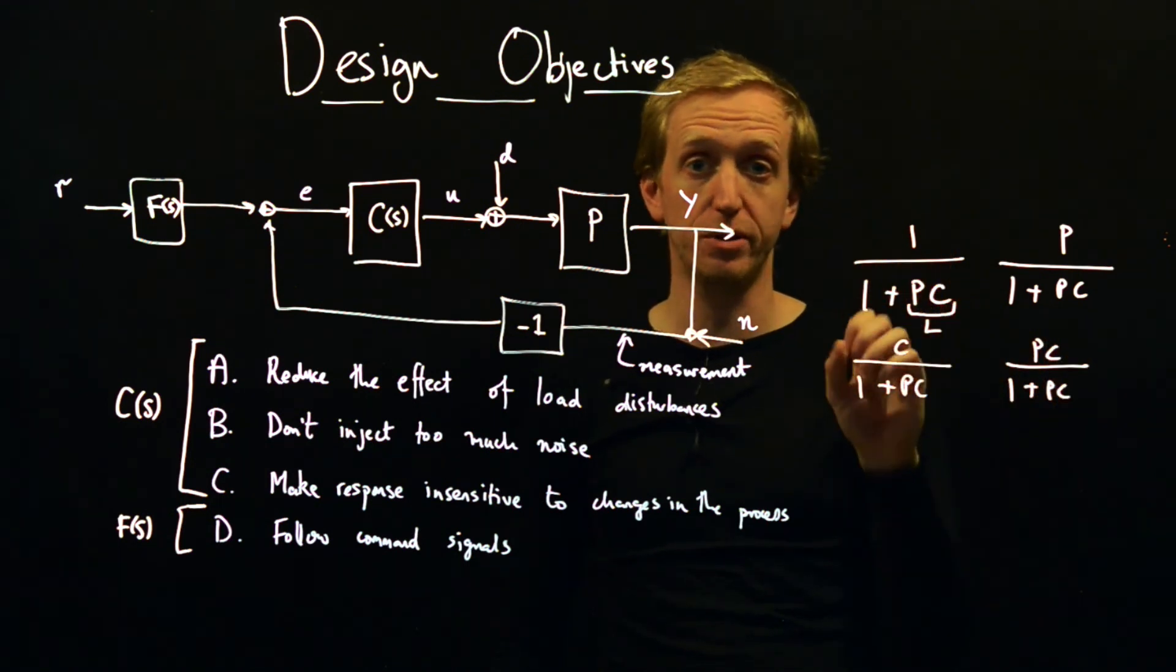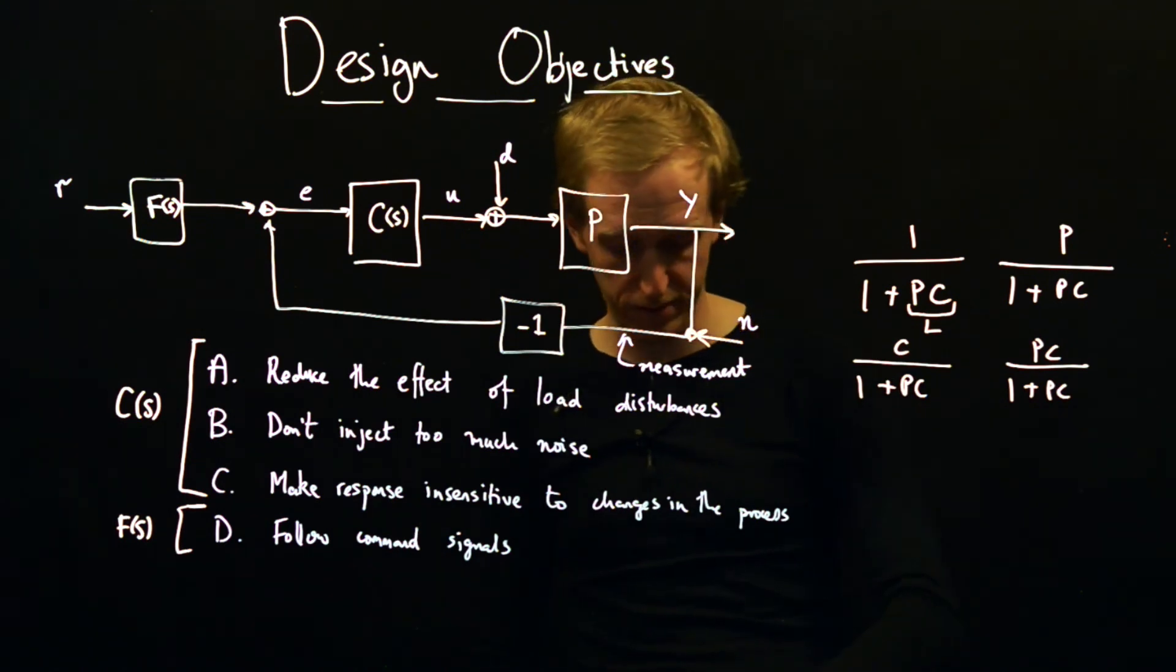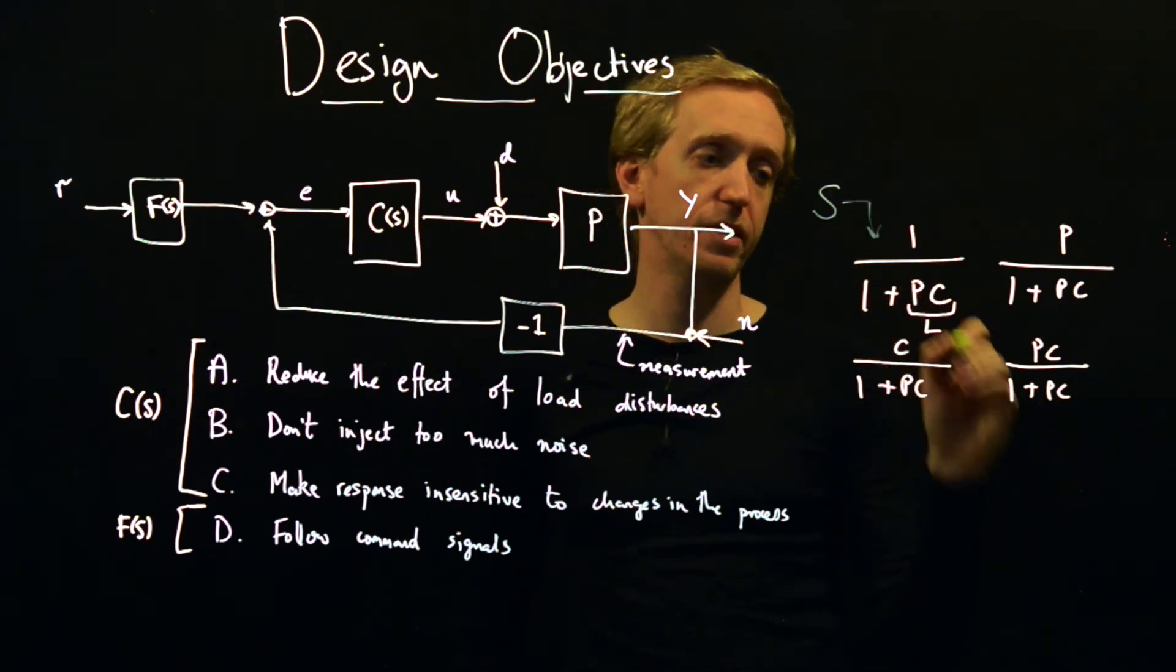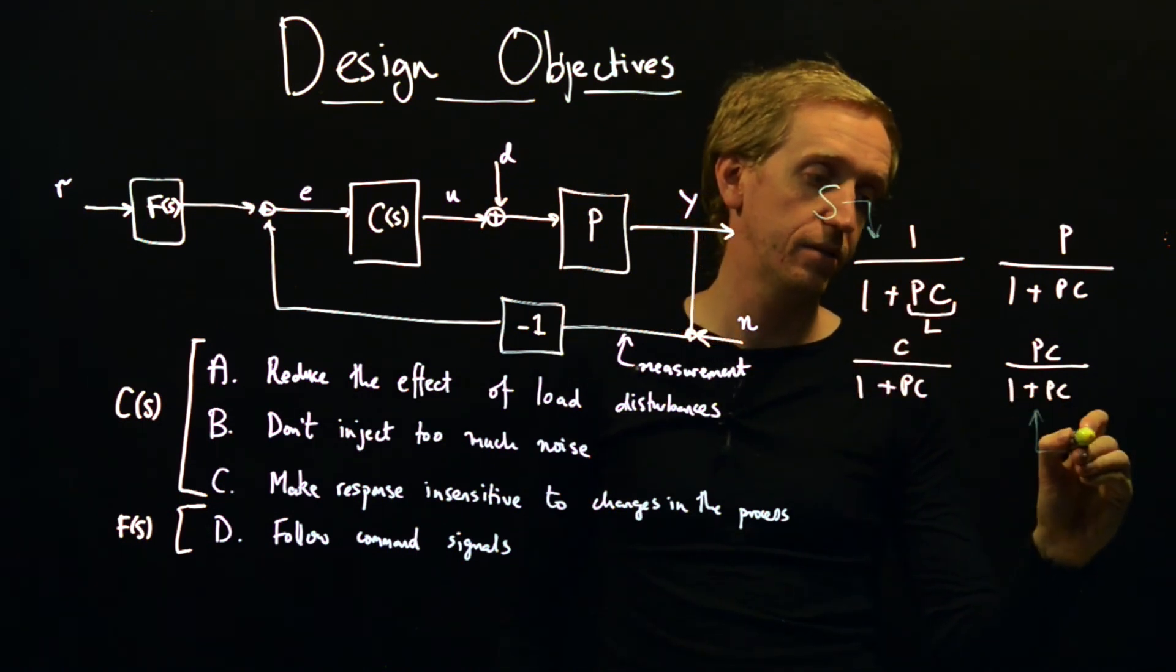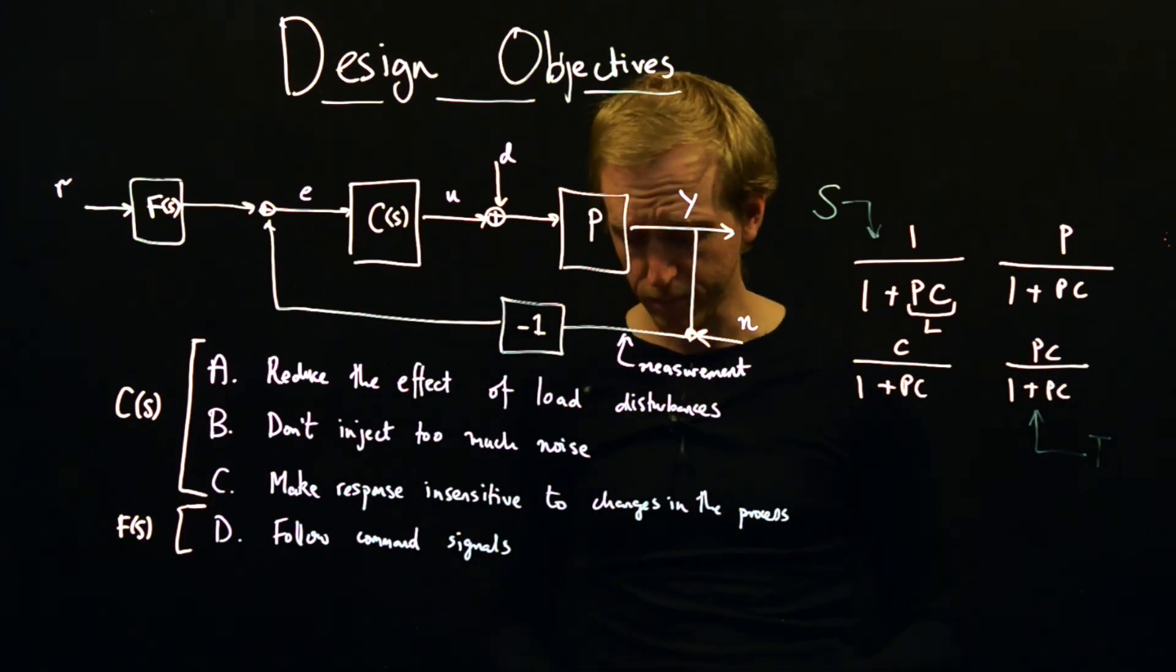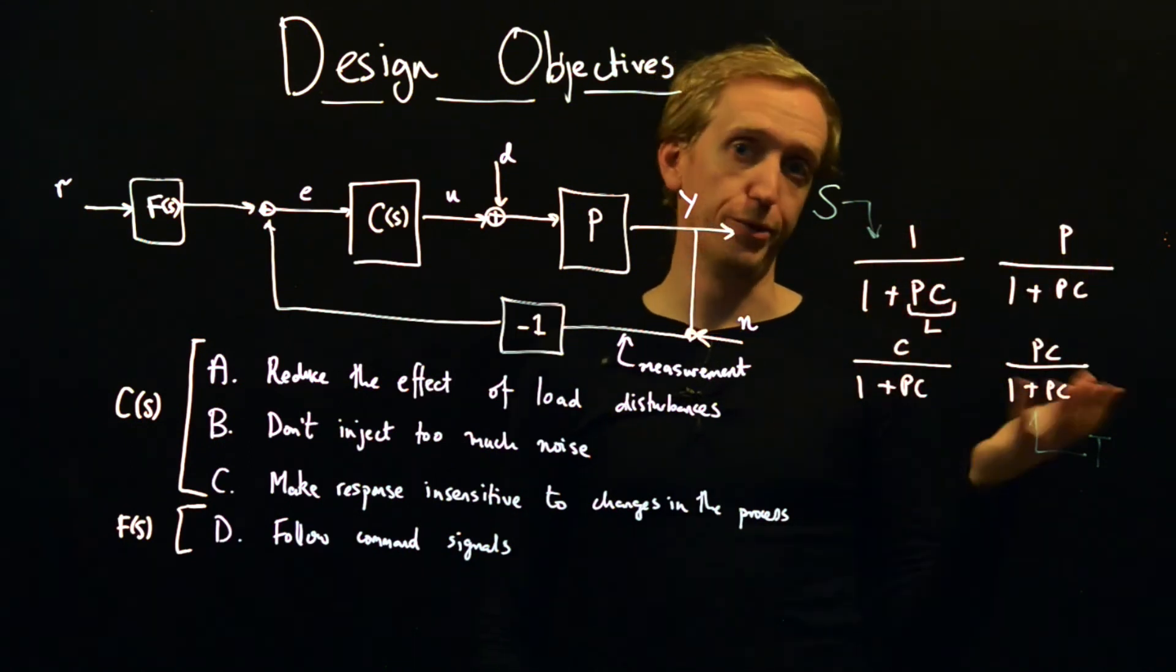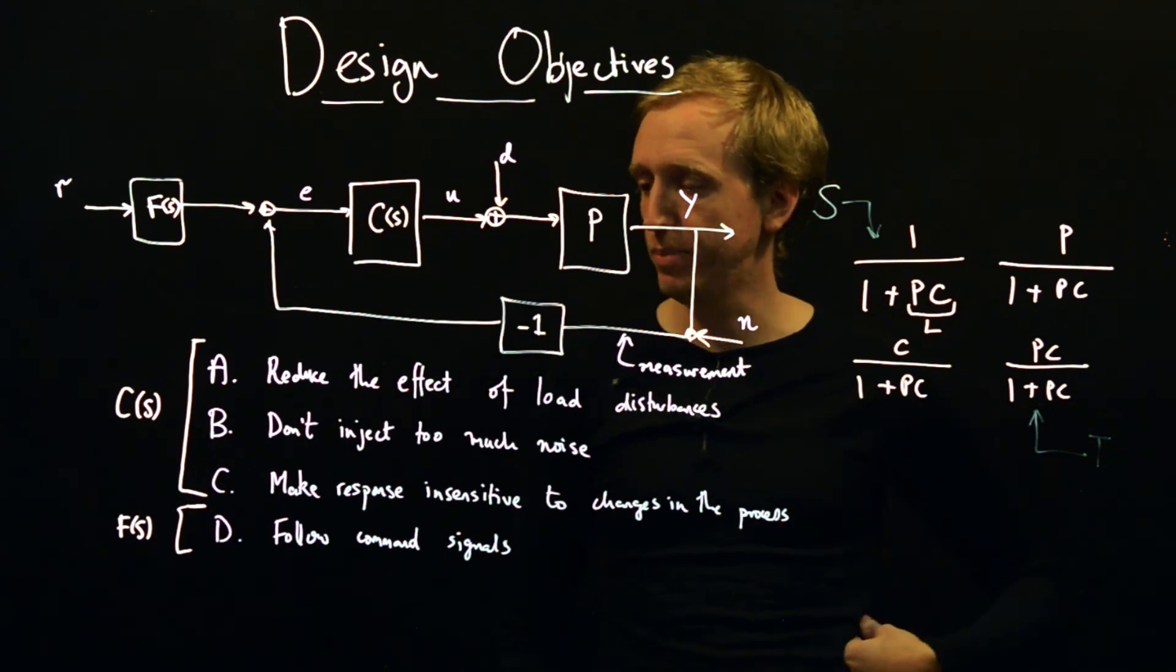They've got special names. This one here, this is called the sensitivity function, and it's commonly denoted by the letter S. So this is S, this is our sensitivity function. And this is T, this is our complementary sensitivity function. But although we focus on these, you have to look at all four, and we'll try and see what they correspond to in different parts of the lecture.